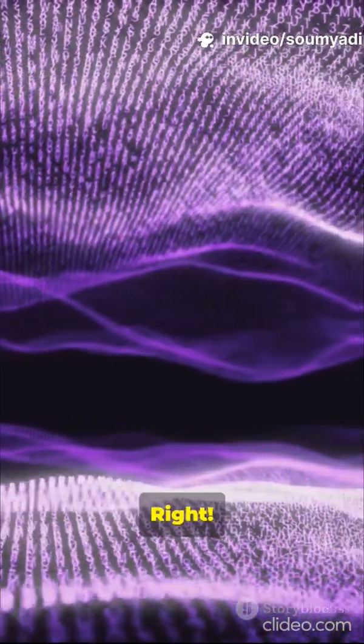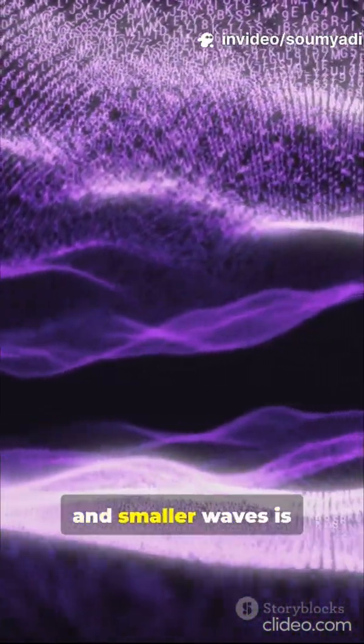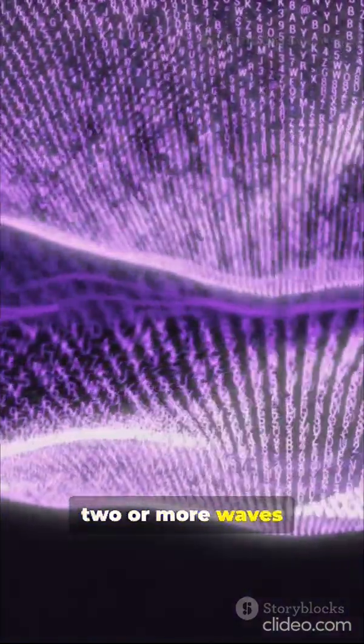Oh, I see. Those spots where the water is almost flat must be the destructive interference areas, right? This pattern of alternating bigger and smaller waves is called an interference pattern. It happens whenever two or more waves collide or overlap.